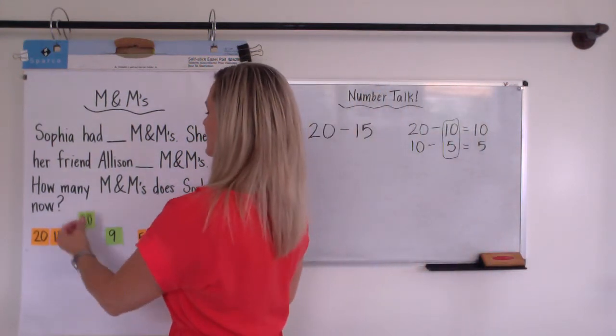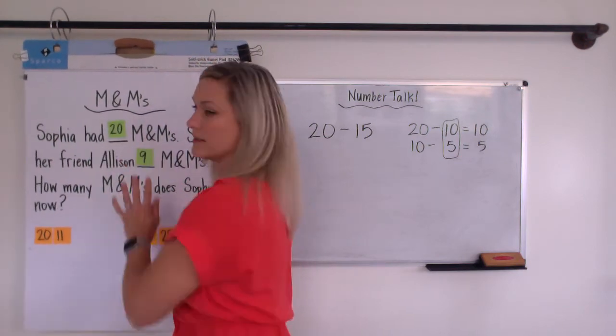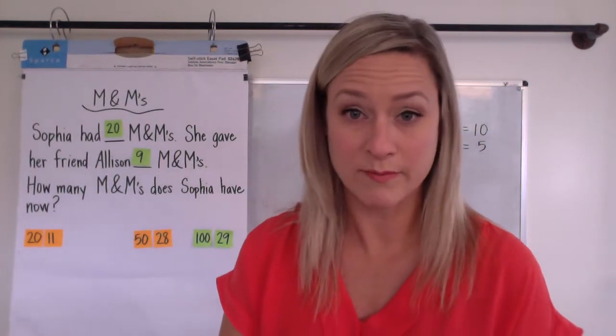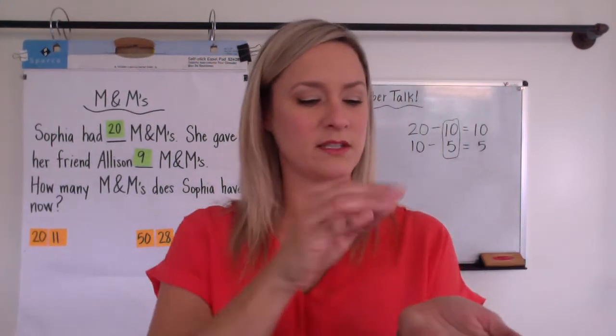I think I'm going to choose this one, 20 and 9. And of course, now I have to reread it with my number sets in there. Sophia had 20 M&M's.